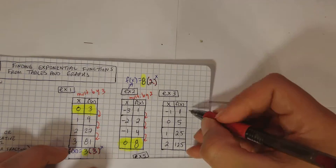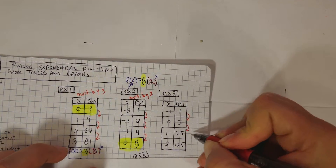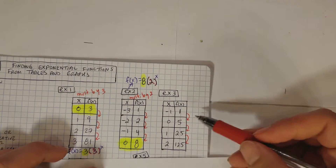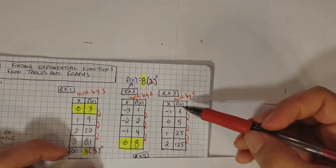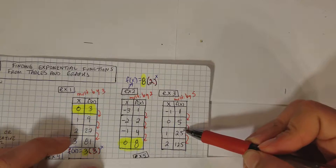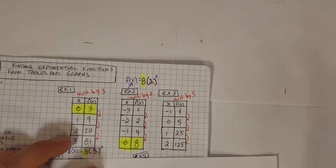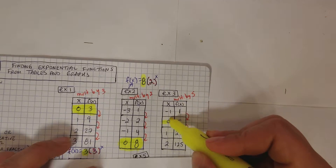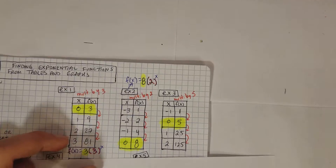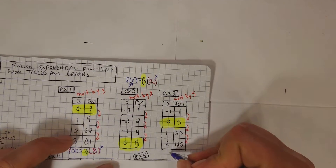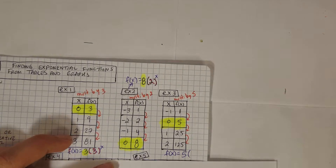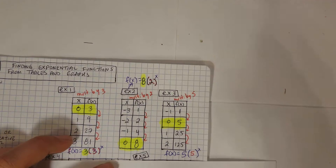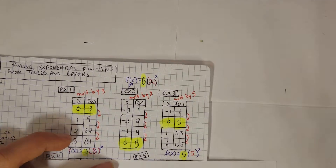Example number three — same idea. What's happening each time with this function? One turns into five, five turns into twenty-five, twenty-five turns into one twenty-five. It looks like we're multiplying by five each time: one times five is five, five times five is twenty-five, twenty-five times five is one twenty-five. Now we just need to find where x is equal to zero. If you go to where x equals zero, the value of the y-intercept would be equal to five. So the final function is f of x equals five times five to the power of x.